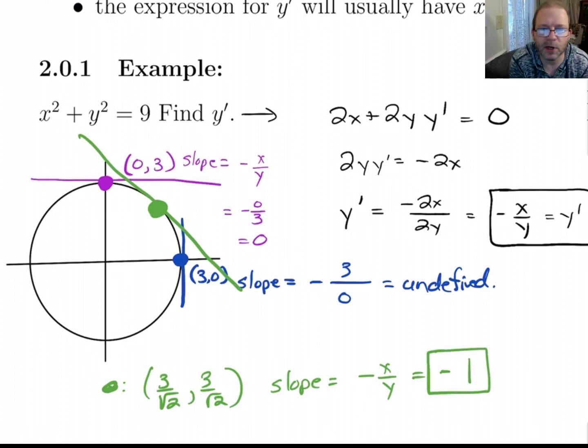So what we're going to do is a bunch of examples of these where we're finding the derivative implicitly. I'm going to stop here, and in the next video, we're going to do several examples.